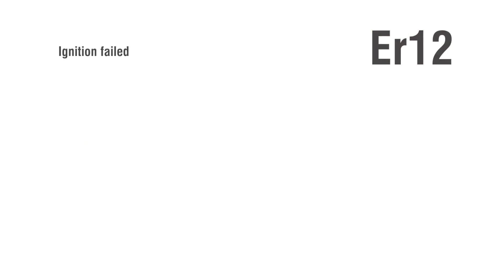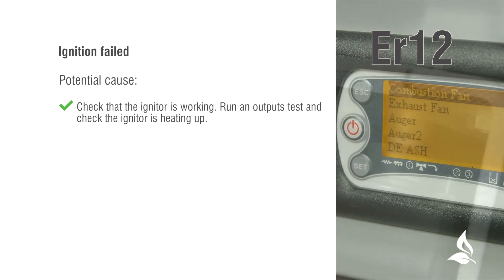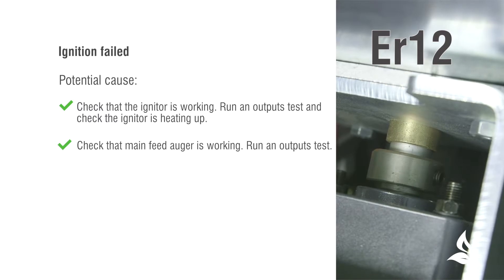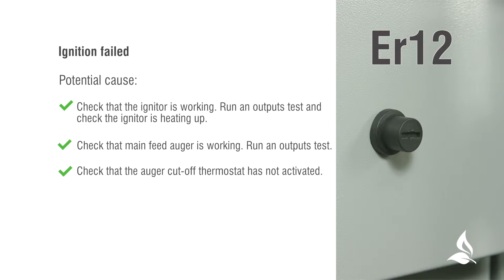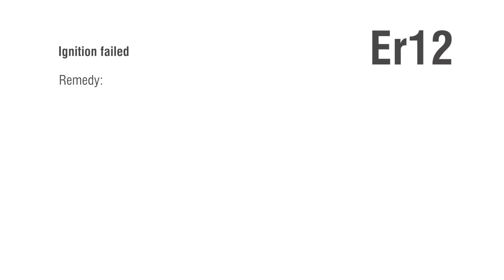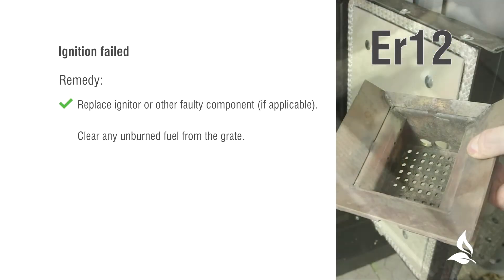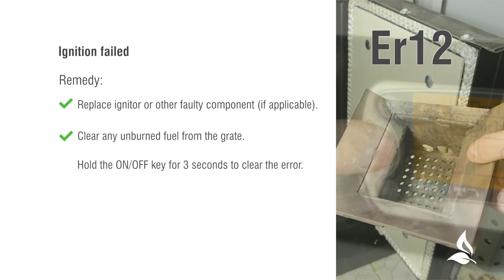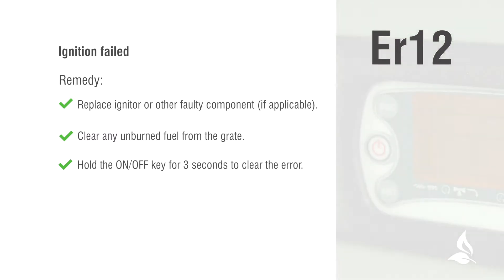ER12: Ignition failed. Potential causes: check that the igniter is working — run an outputs test and check the igniter is heating up. Check that the main feed auger is working — run an outputs test. Check that the auger cut-off thermostat has not been activated. Check the starting charge of fuel during the start-up cycle and increase if necessary. Remedy: replace the igniter or other faulty component if applicable. Clear any unburned fuel from the grate. Hold the on-off key for 3 seconds to clear the error, then restart the boiler.